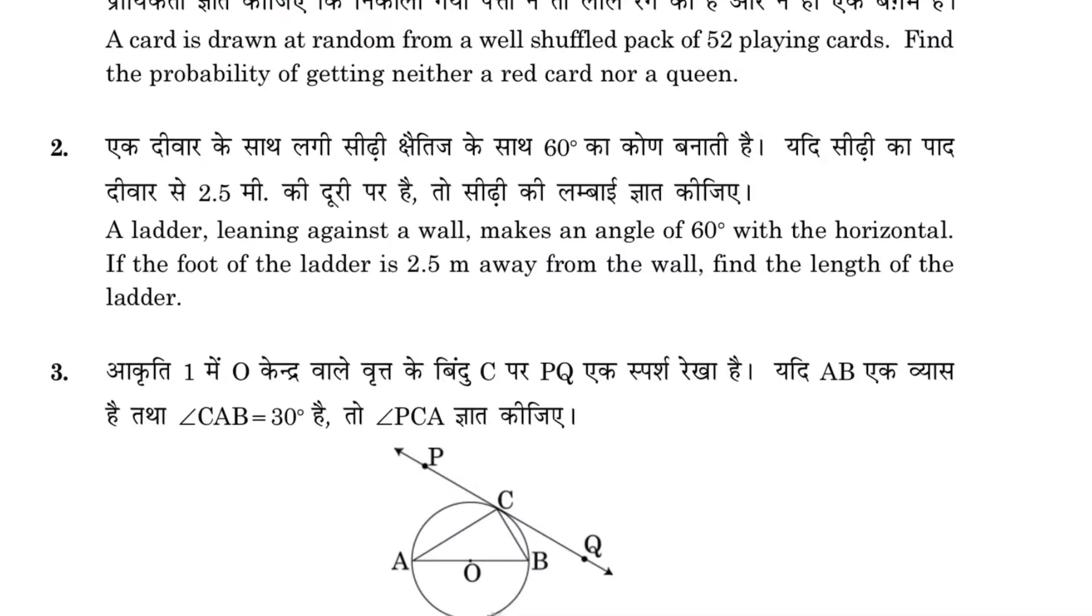Question number two: We are given a ladder leaning against a wall. This is the wall and this is the ladder, making an angle of 60 degrees with the horizontal. It is 2.5 meters away from the wall. You have to find the length of the ladder. Let's name the vertices A, B, C.